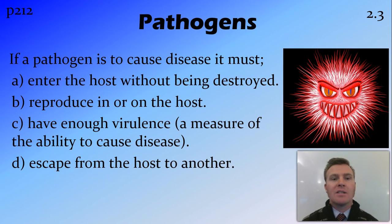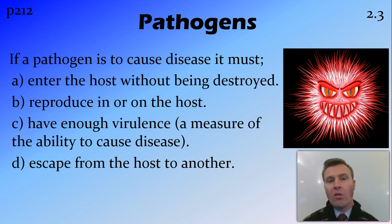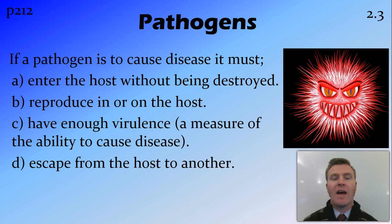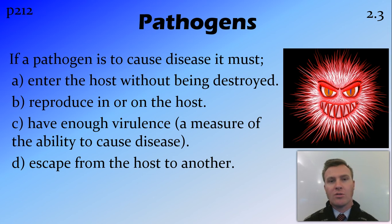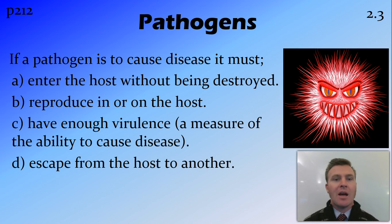For a microorganism to be considered a pathogen, it must do a few things. It must firstly be able to enter the host without being destroyed, then reproduce in or on the host — in the case of pathogens that infect the skin. It then needs to have enough virulence, which is when it starts causing disease; the amount of virulence is a measure of its ability to cause disease. A particularly virulent pathogen would cause disease quite easily, while a less virulent one would not. Finally, it needs to escape from the host and move to another host, infecting that host and giving us infectious disease.